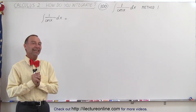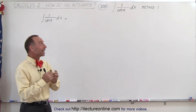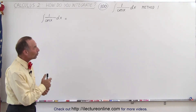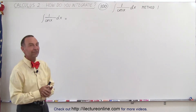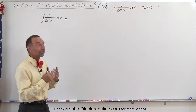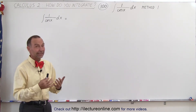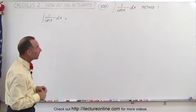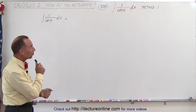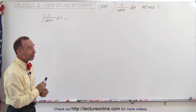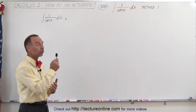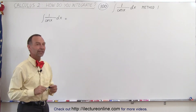Welcome to Electron Line. Our next integral is the integral of 1 over the cosine of x dx. Now, it looks very simple, but it may not be that easy to do unless you can think of the trick associated with this. Matter of fact, there are several tricks, so we're going to show you the first one now.